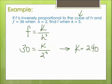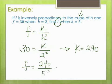Alright, so find f when h is 5. So my k is 240 and my h is 5. So it's 5 cubed. So I do 240 divided by 5 cubed, which is 125. So f is going to end up being 1.92.